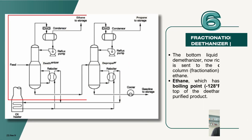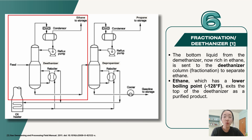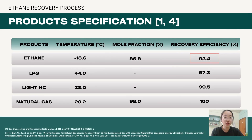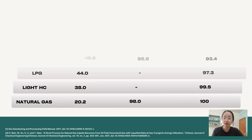In the deethanizer, ethane, which has a lower boiling point at around negative 128 degrees Fahrenheit, exits the top of the deethanizer as a purified product. Here are the product specifications of ethane with 93.6% recovery from a simulated industrial plant with the process conditions stated above.